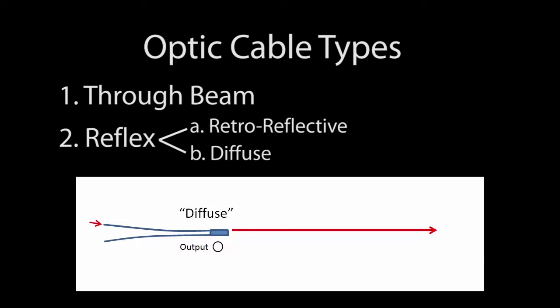Diffuse is the same setup, but now we wait for an object to pass by and reflect light back to the sensor. So since the object is reflecting light back to the sensor to trigger the output, we call that light on.